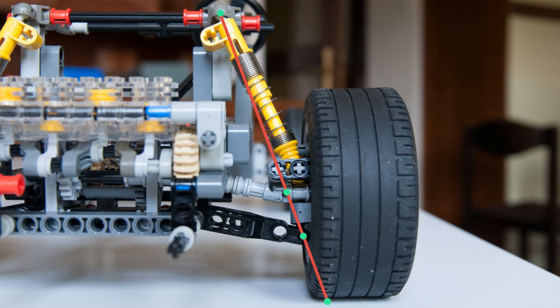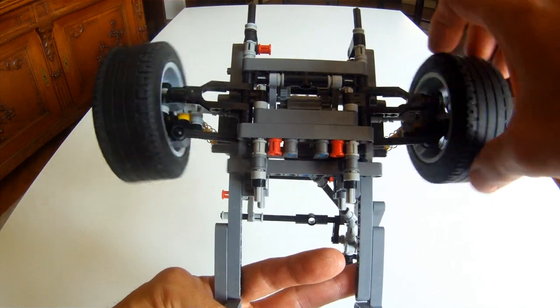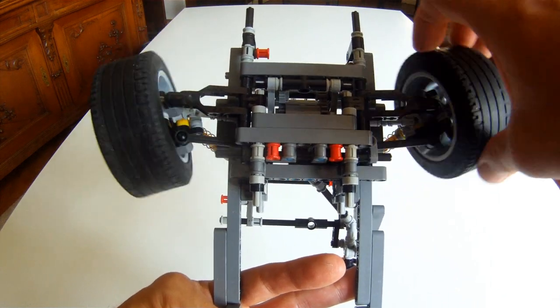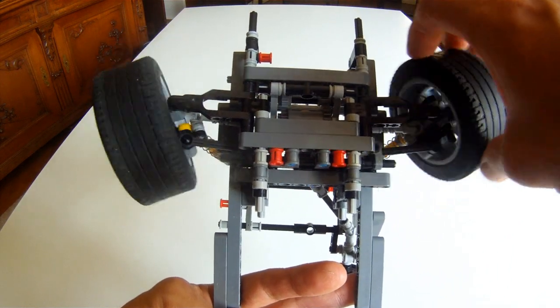Ideally, of course, the drive shaft CV joint should be on the kingpin axis. You can see here that the drive shafts swing just a bit when the wheels are steered, which is acceptable for our purposes.